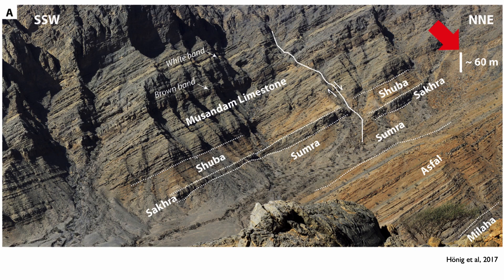Here is an example from our own work in the United Arab Emirates. You can see the succession of limestone from the Musandam Peninsula — these were deposited in shallow water. Notice the red arrow pointing to the scale: this is 60 meters, a sizable package of carbonates. Because these carbonates were deposited in shallow water, it's actually hard to know at what time they were deposited, since most good biostratigraphic markers are pelagic organisms. We find a few ammonites, but not many.